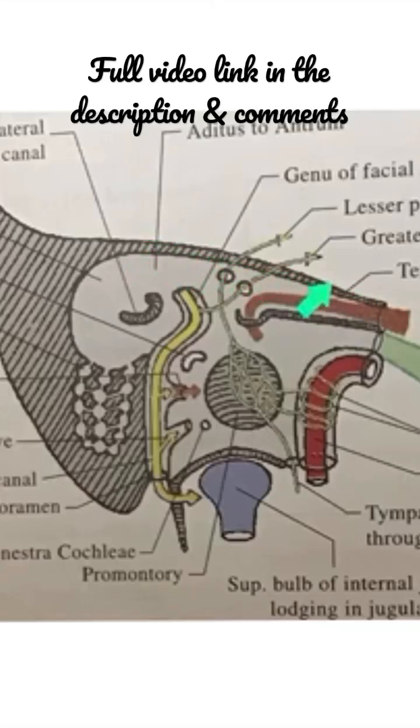The roof of the tympanic cavity is formed by the tegmen tympani, a thin plate of bone of the petrous temporal part. It intervenes between the tympanic cavity and the middle cranial fossa.